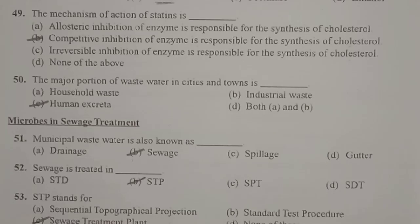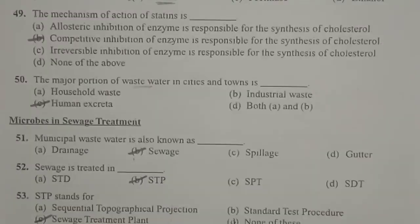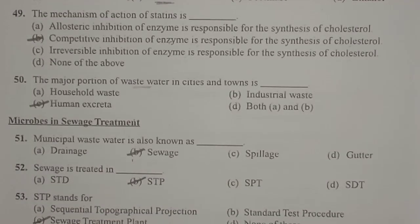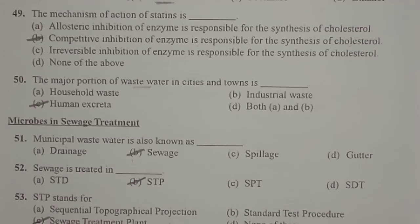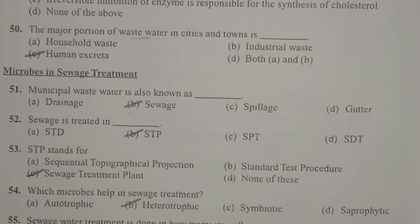Next: the major portion of waste water in cities and towns is human excreta. When we talk about sewage water, the major portion of waste water in cities and towns is mainly human excreta. Other components include animal excreta, industrial waste, agricultural waste, etc. But among these, human excreta is the major one.